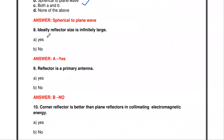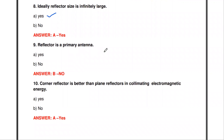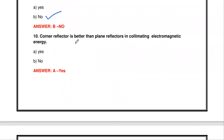The next question: ideally the reflector size is infinitely large - true or false? It is true. The ideal reflector size is infinite; the flat sheet is infinitely large. Next: the reflector is a primary antenna - true or false? It is false. The reflector antenna is not a primary antenna; the reflector is a secondary antenna.